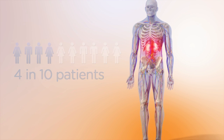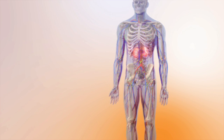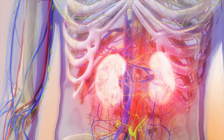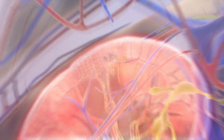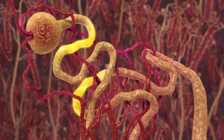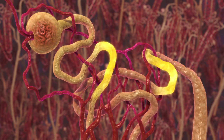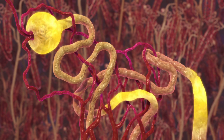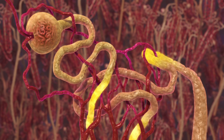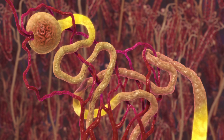We each have two kidneys that are located just below the rib cage, on either side of the spine. Their main job is to remove waste products from the blood. This is done by the many thousands of filtering systems called nephrons.